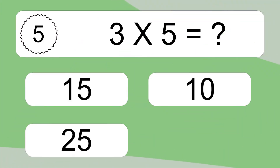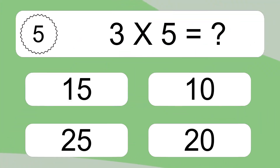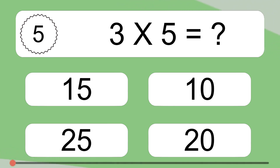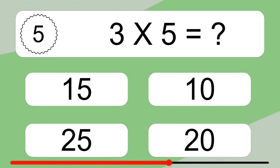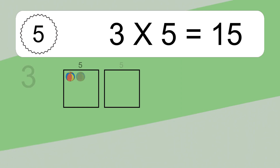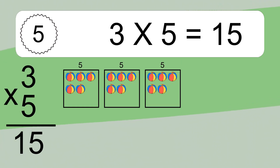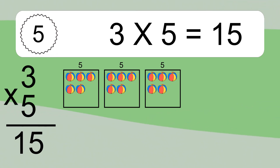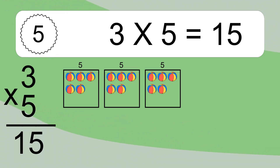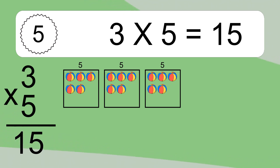3 times 5 equals what? 3 times 5 equals 15. We have 3 boxes, and each box has 5 colorful balls inside. If you count all the balls in all the boxes together, you will have 3 times 5 balls. This equals 15 balls.